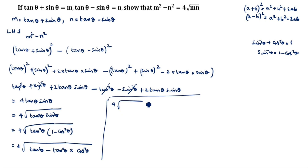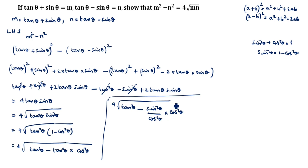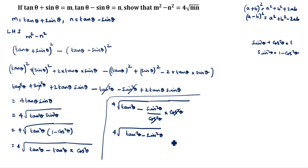We split tan²θ = sin²θ / cos²θ. So tan²θ · cos²θ = (sin²θ / cos²θ) · cos²θ, and cos²θ cancels, giving sin²θ. We now have 4√(tan²θ - sin²θ). This is in the form a² - b², where a = tan θ and b = sin θ.